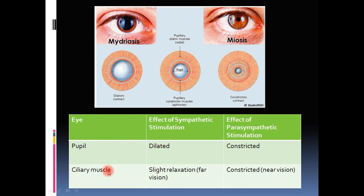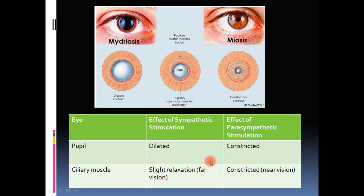The second function in the eye is control of ciliary muscles for lens focus. If the lens is more convex, it focuses on near objects; if flat, on far objects. The parasympathetic division predominantly supplies the ciliary muscles. Parasympathetic stimulation causes ciliary muscle contraction, making the lens more convex for near vision, while ciliary muscle relaxation flattens the lens for far vision.